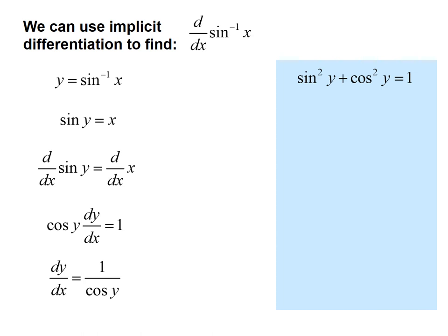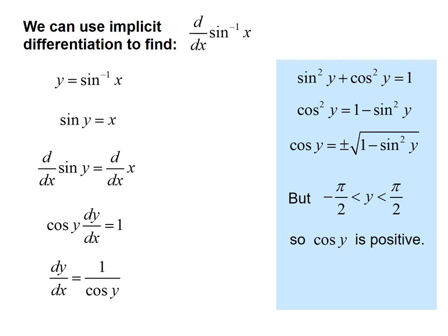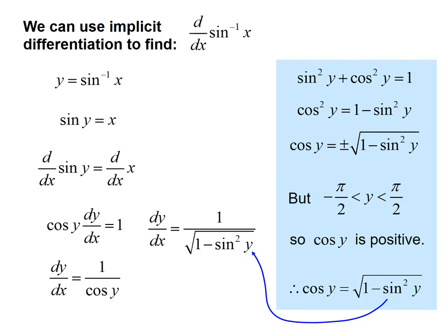We're going to take a look at one of our trig identities: sine squared plus cosine squared equals 1. And let's isolate cosine. Since we know that y is between negative pi over 2 and pi over 2 in order for this function to have an inverse, we know that cosine then must be positive. So we can drop that plus or minus and just deal with the square root. So we replace cosine of y with the square root of 1 minus sine squared. But if we refer down to that second line, we have sine of y equals x. So this is the same as 1 over root 1 minus x squared. So this is our derivative for inverse sine.